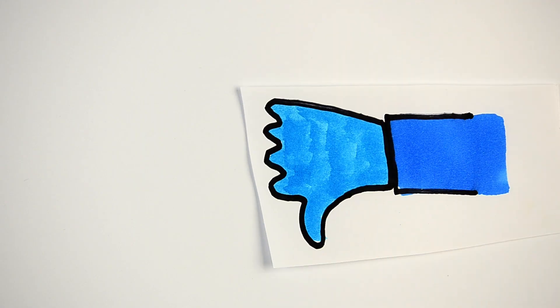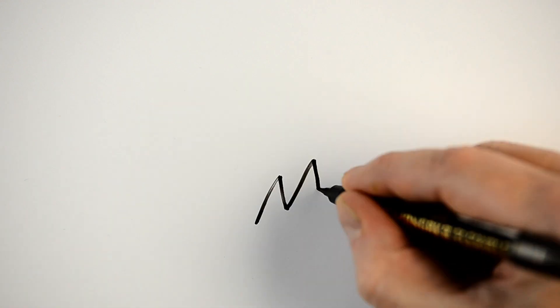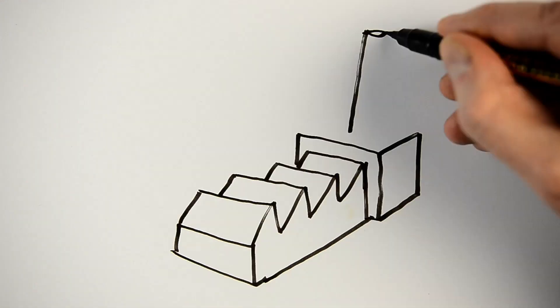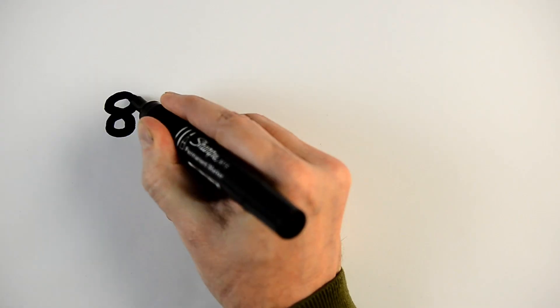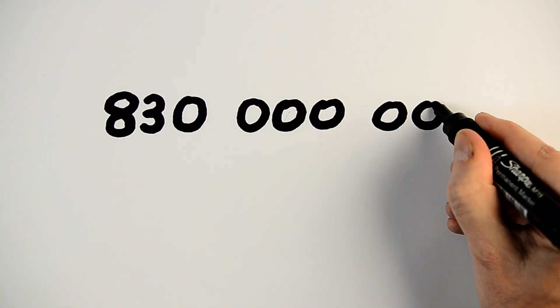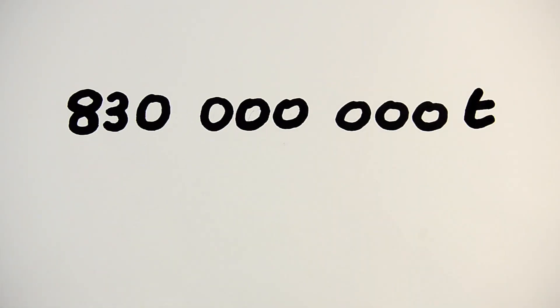This is where the problem lies, because that process isn't always environmentally friendly. Today, hydrogen is mainly used in industry and is largely produced using fossil fuels, which are responsible for high CO2 emissions. The production of hydrogen is currently responsible for 830 million tons of CO2 emissions per year.